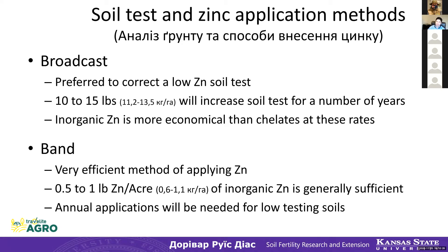There are two methods of applying zinc. The most popular ones are broadcast in the rows, strip and banding, lower range and in the corner. Broadcast is important when you are critically deficient in the ground. For the right crop, the number of prices will be economically beneficial, and broadcasting is a cheaper way.